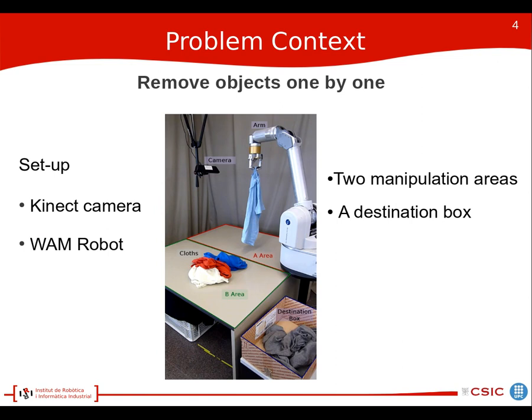The robot has to remove each piece of clothing one by one and put it into the destination box. Removing several pieces of clothing at the same time is considered a failure to complete the task.